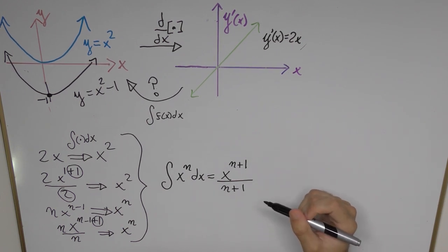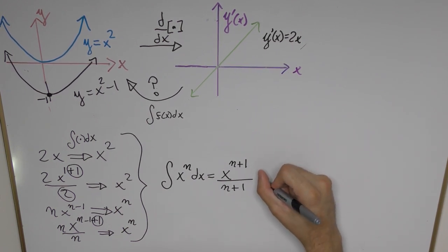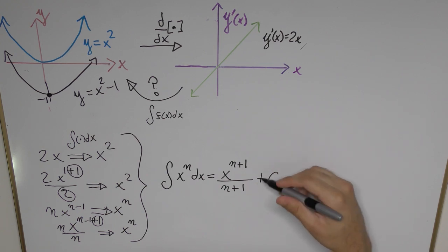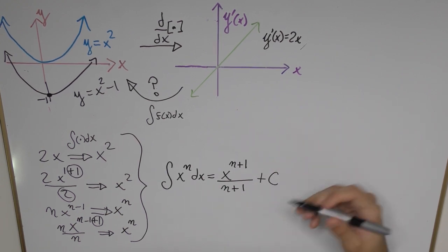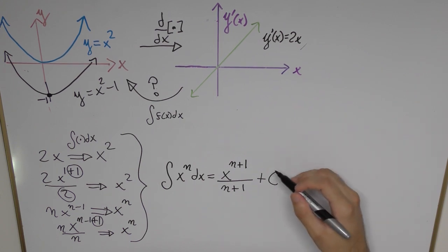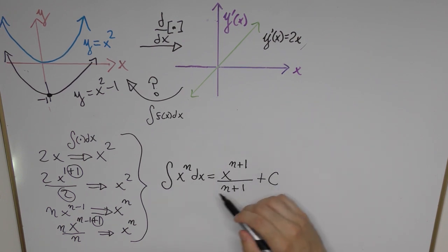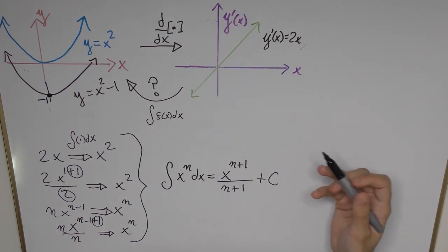So to generalize this even further we're going to add a constant of integration and we're just going to denote it as C because that's the notational convention in most textbooks. And really what this is saying is that for any integration, not just for powers of x but anything else that we want to integrate, we should always include a plus C at the end.